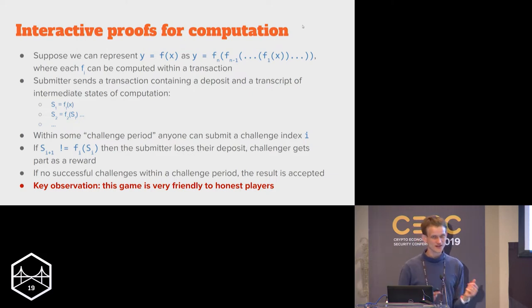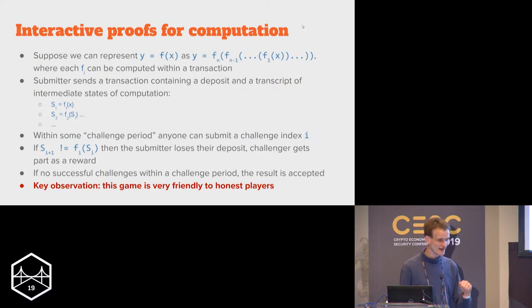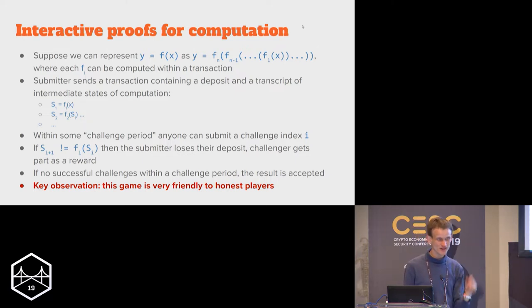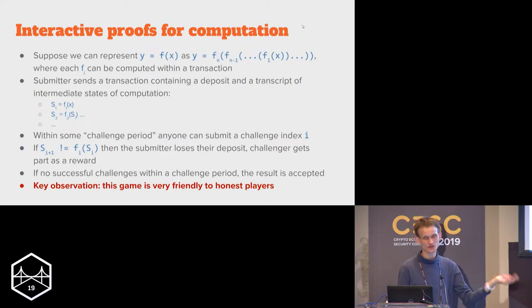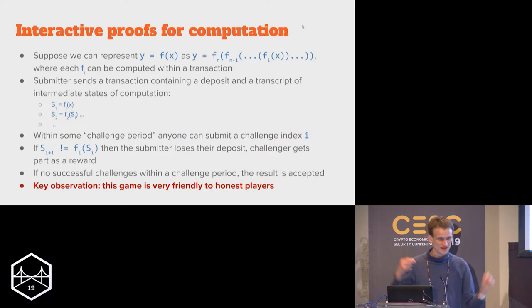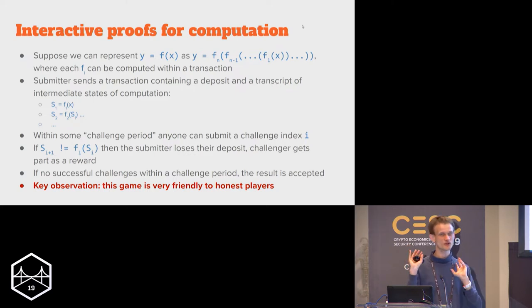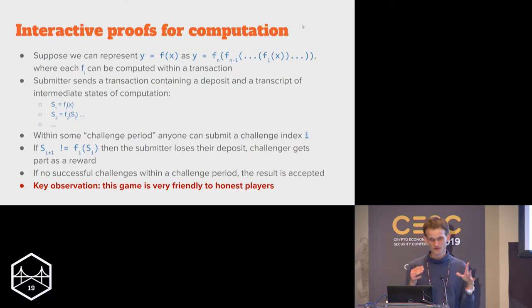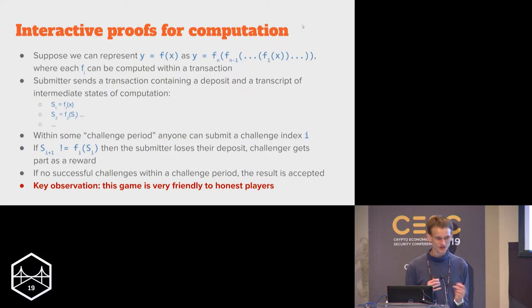So how do we do a layer two protocol that convinces a blockchain of the result of this computation? Here's the technique: you have a standard challenge-response game. The submitter sends a transaction providing y — the output — but also a trace of intermediate steps. They take all of these intermediate states, put them into a list, and submit this list as a transaction along with a deposit. This goes on-chain into a smart contract. Now you wait. Case one: nothing happens for a week. After a week, the submitter gets their deposit back, gets a reward, and the chain knows the result of the computation.